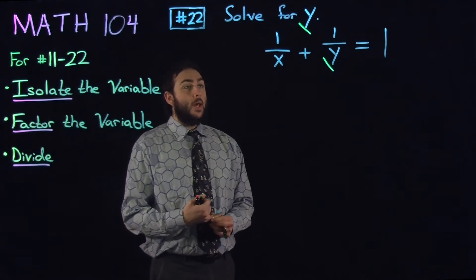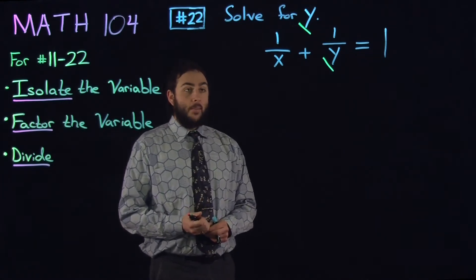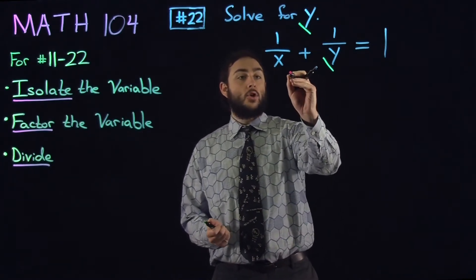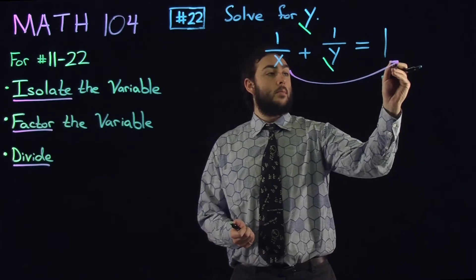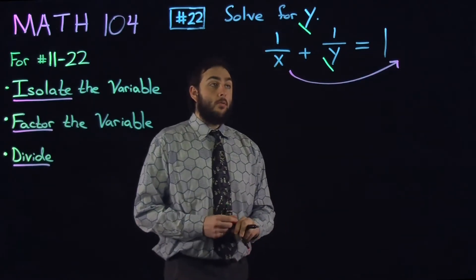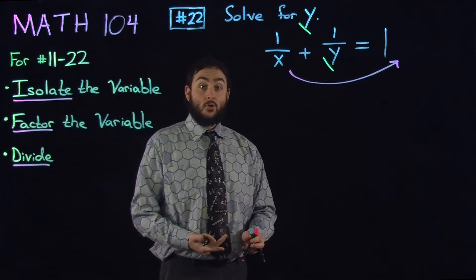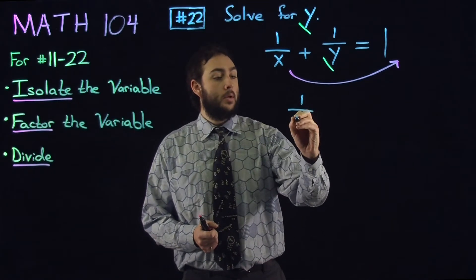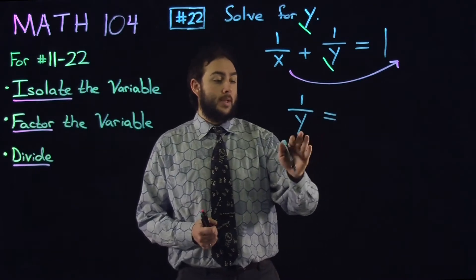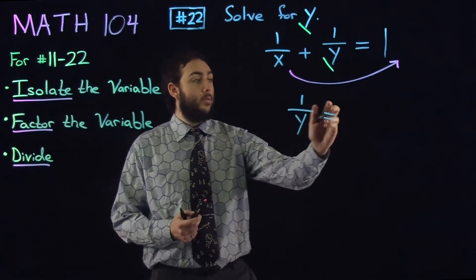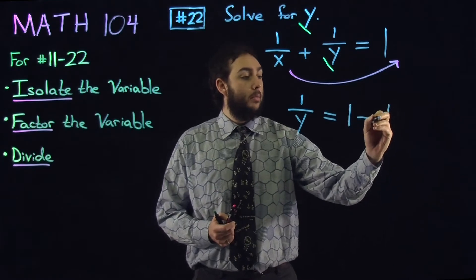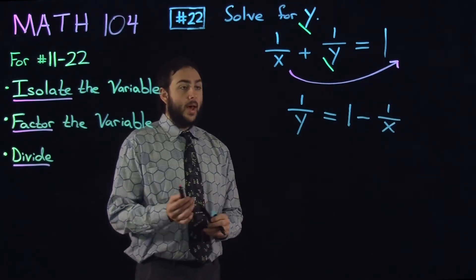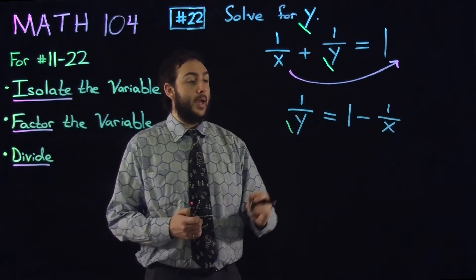We see that y appears on the left side in the denominator. So what we're going to do to isolate all the terms that involve y is to move this 1 over x term over to the right by subtracting it off. Now the left-hand side is 1 over y, and the right-hand side is 1 minus 1 over x. We see that the y is isolated here.